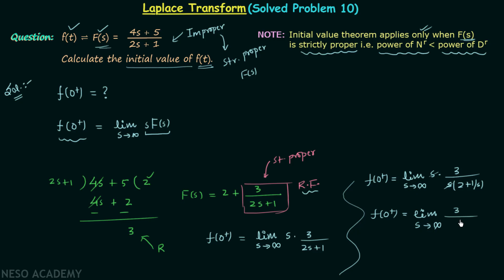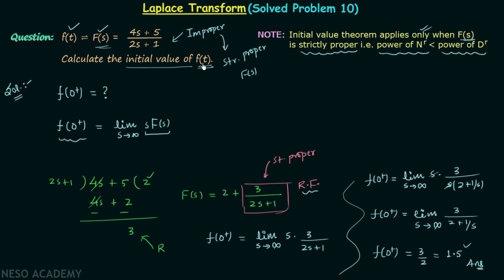When S tends to infinity, 1/S equals 0. So finally we get F(0+) = 3/2, which equals 1.5. This is our answer — the initial value of the signal F(t).